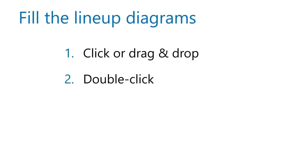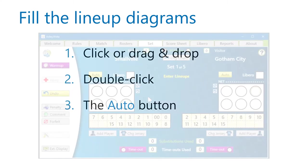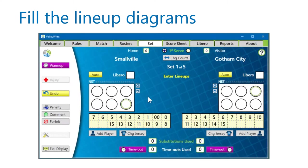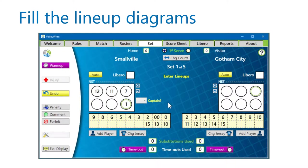To make the Windows version like the iPad version, we added the Auto button. Click the Auto button and then click on the numbers on the bench as the spotter calls them out in order. If you make a mistake, just click the Auto button again, or the blue area outside the diagram, to get out of Auto mode.